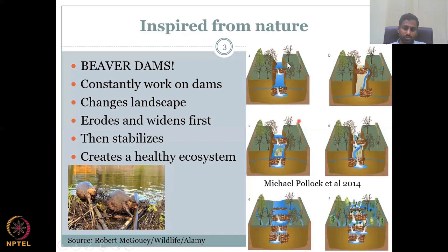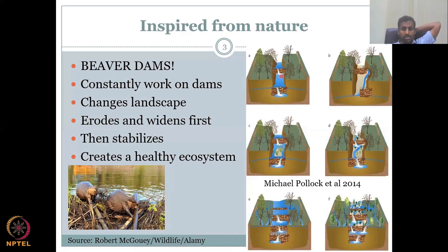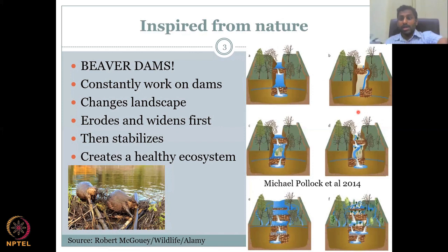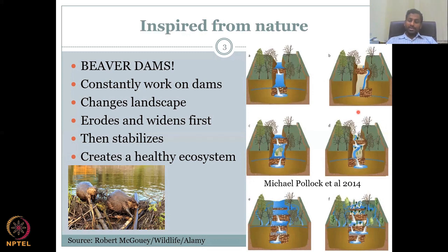Without check dams or beaver dams, water continues straight, cutting through and the forest won't expand. But by blocking it naturally — where water is always still flowing through, not zero flow — the benefits are shared between different players. It is not only one sector getting the water; all people get the water. It creates a very healthy ecosystem where everyone enjoys the water.